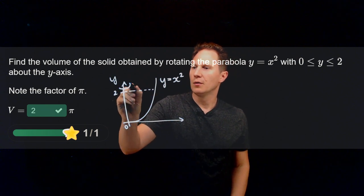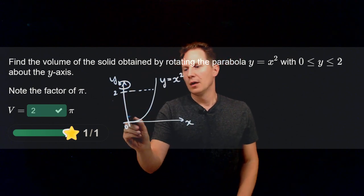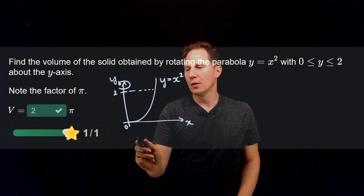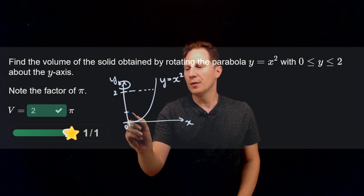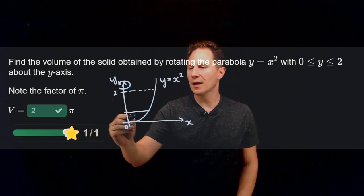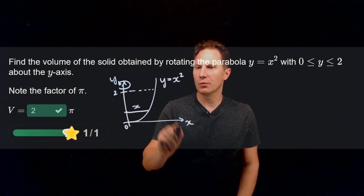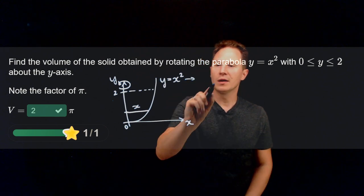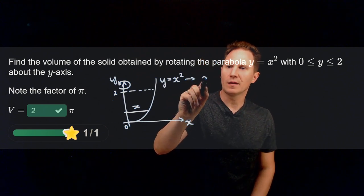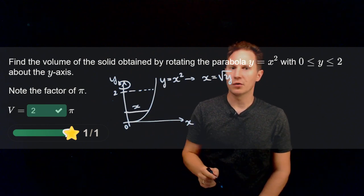So it's about the y-axis that we are rotating. And therefore, when we subdivide the interval between 0 and 2 into small subintervals, at each point along the y-axis, the corresponding radius is given by the x value. And if y is equal to x squared, that means that x is equal to the square root of y. So that will be the radius of each cylinder.